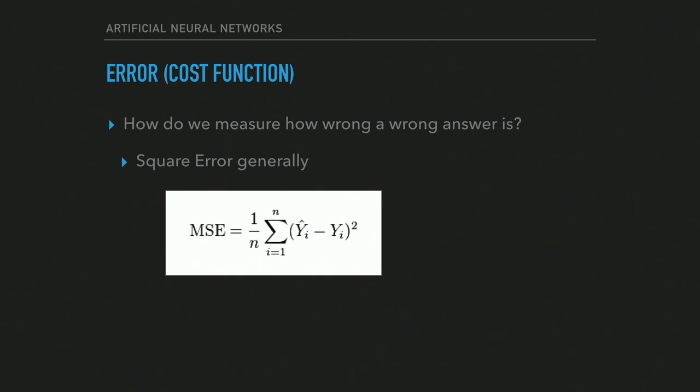The real magic is setting the weights to achieve something useful — that's the learning aspect. We use supervised learning: feed in a known input, measure how wrong the output was, and adjust weights. We need to know not just that it was wrong but how wrong — using something like mean squared error, which has a smooth parabola-like shape with properties that help determine how much and in which direction to move each weight.